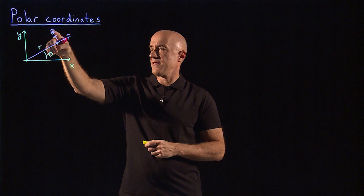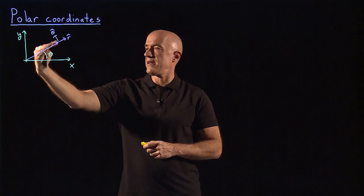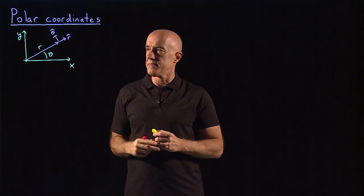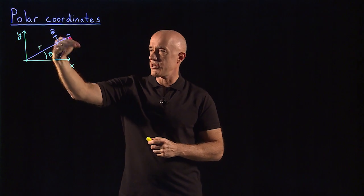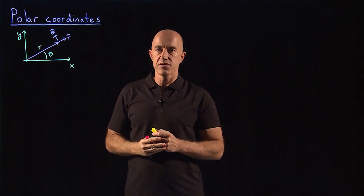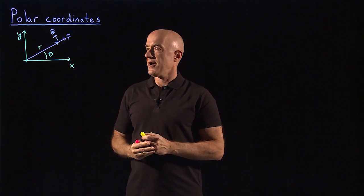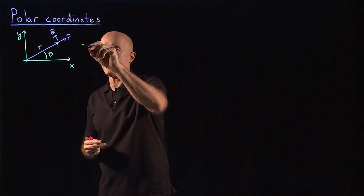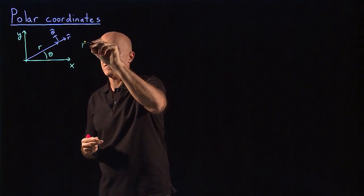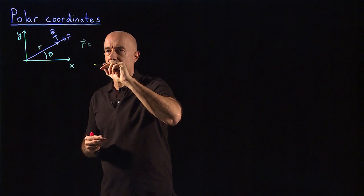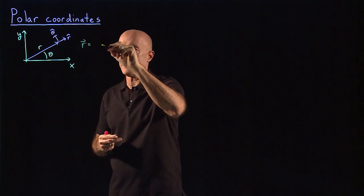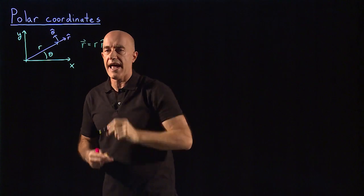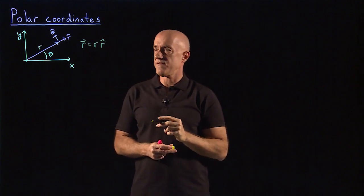Both r hat and theta hat depend on theta, because as you move this vector, the direction of these unit vectors also changes. The vector r itself can be represented by the length of the vector times the r hat unit vector.